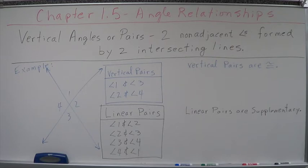Now, intersecting lines also form linear pairs. Angle one and angle two are a linear pair. Angle two and angle three are a linear pair. Angle three and angle four, they're a linear pair. Angle four and angle one, they are a linear pair.